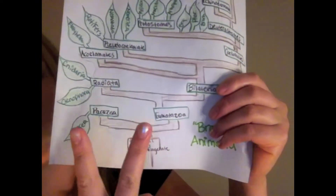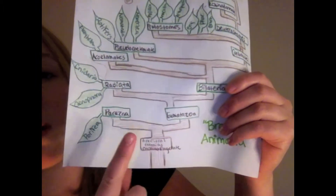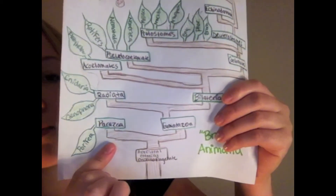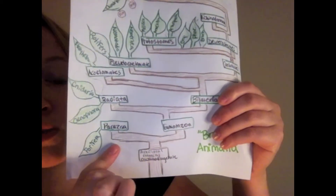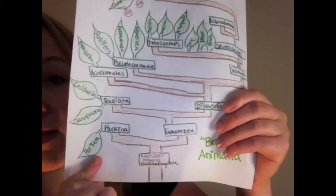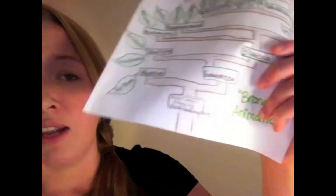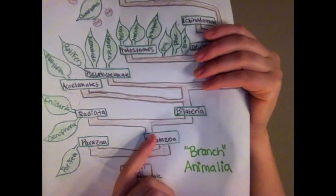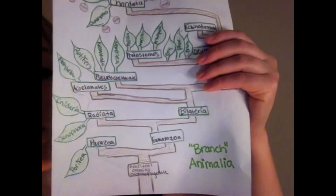From there, it splits further into two groups: parozoa and eumetazoa. Parozoans are animals without true tissue. This group is made up of porifera, the sponges. I would have liked to start with them, but it's a little too cold for me to be snorkeling and hitting the reefs, so we'll get to them in about a month or so. Eumetazoa encompasses all the other animal species — species with true tissue.